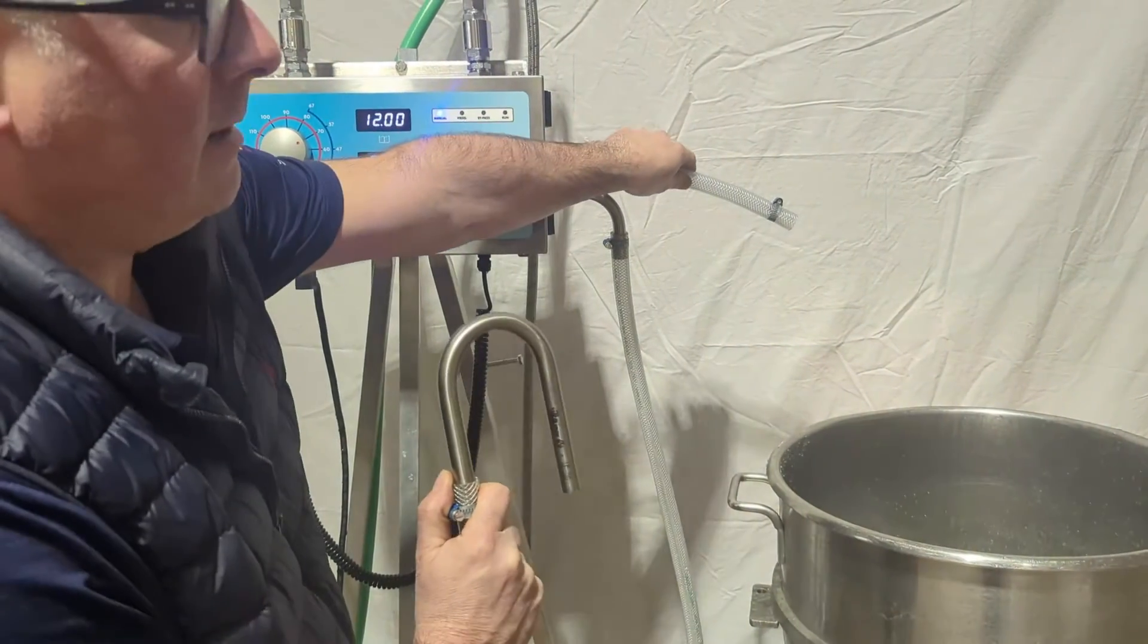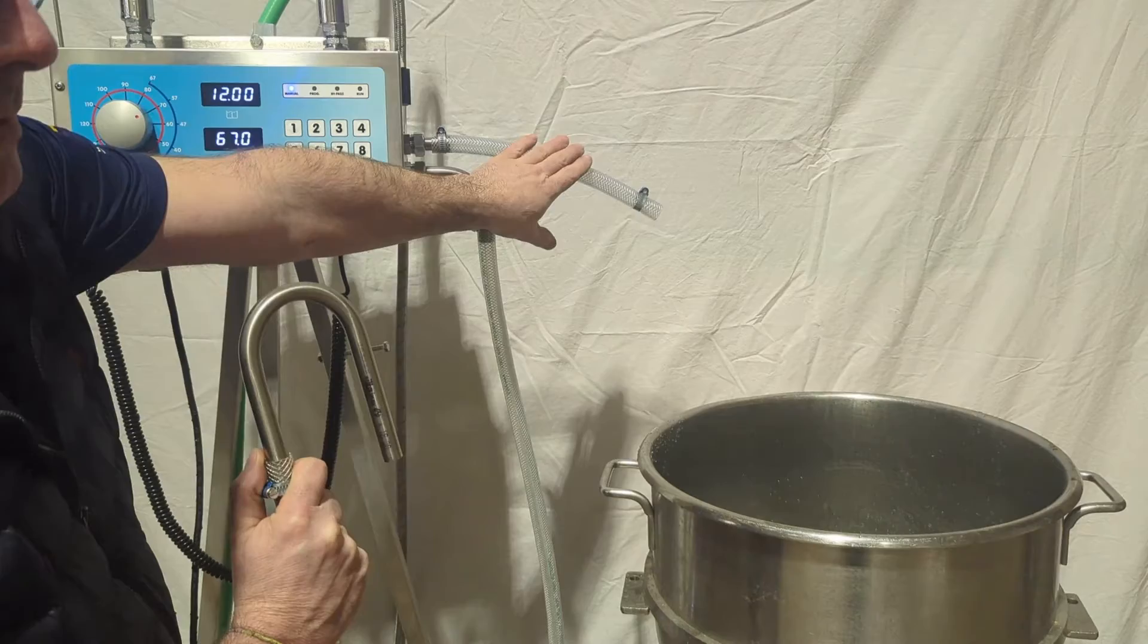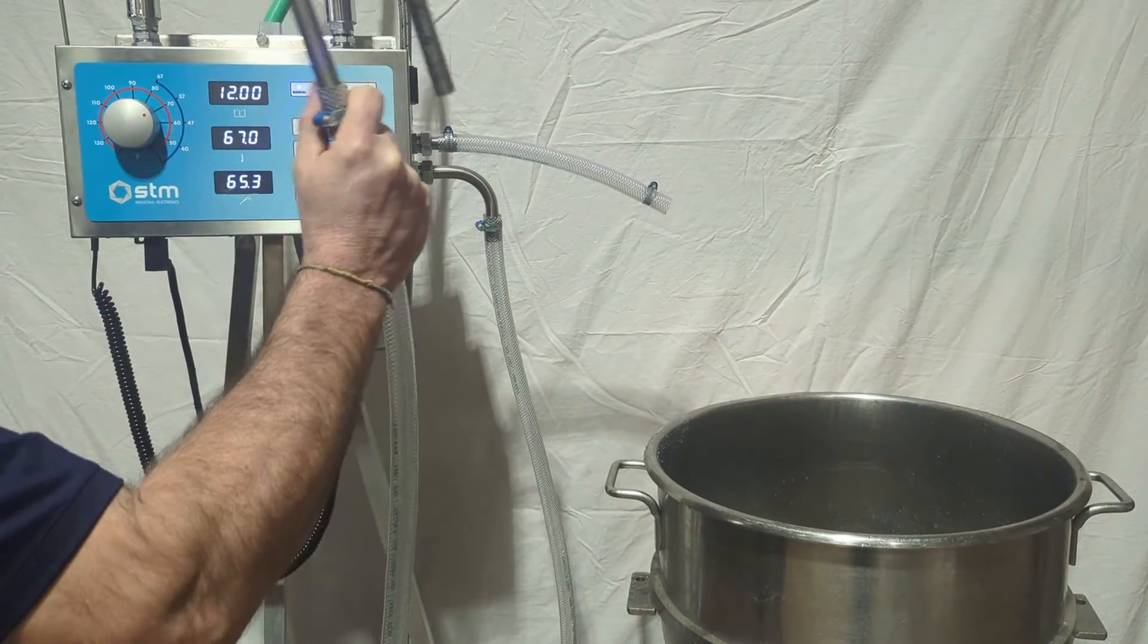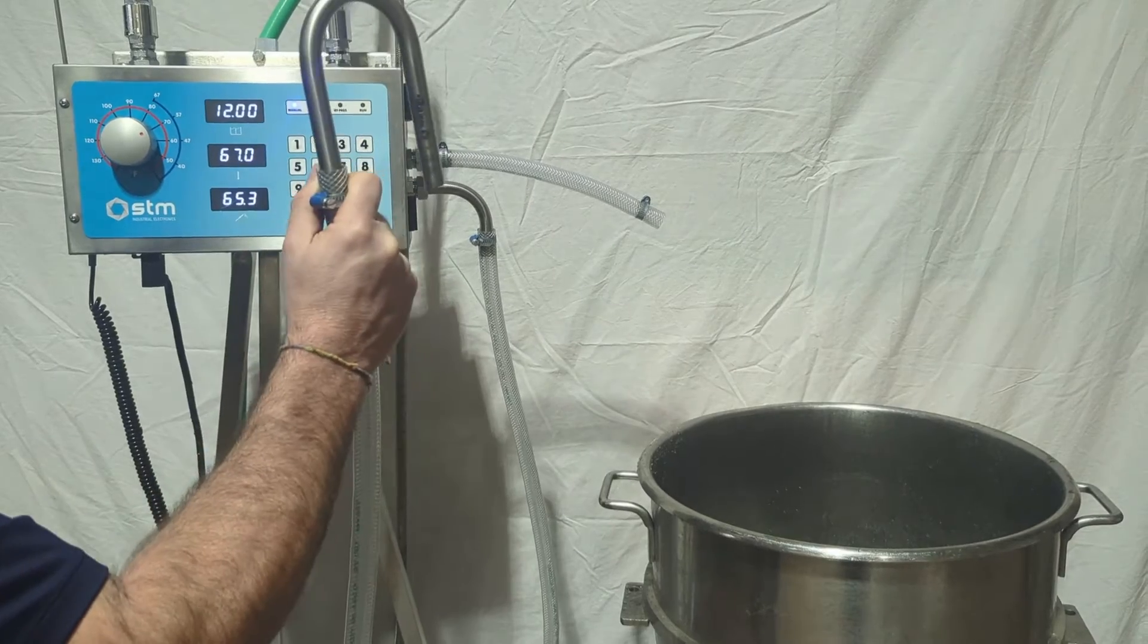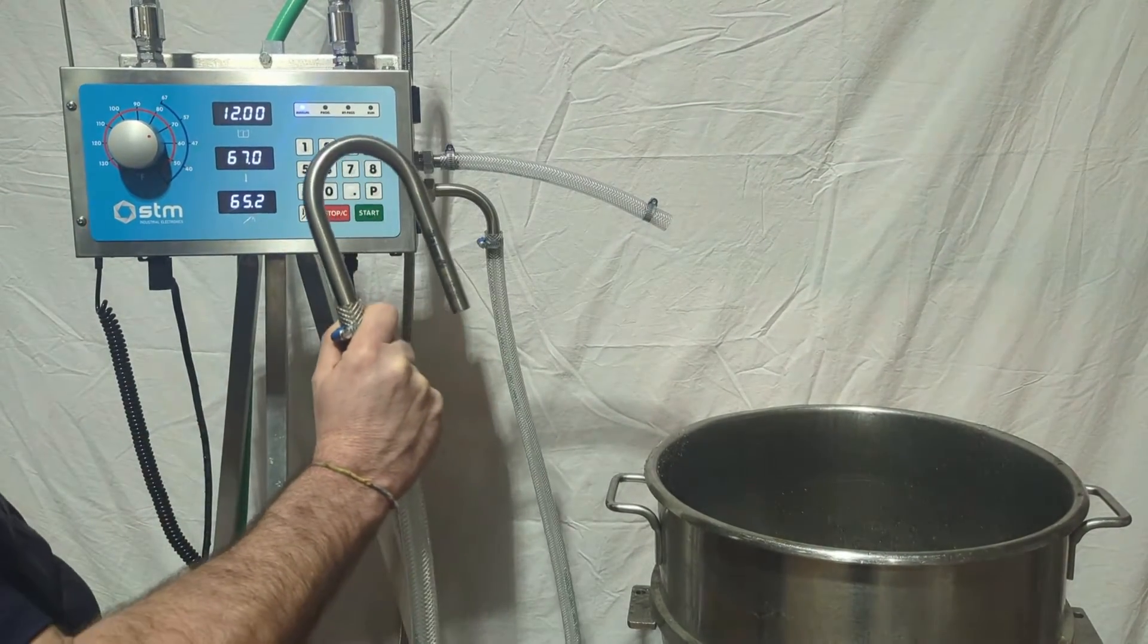When the temperature is not in our set range, it will bypass through the bypass hose. And when all of a sudden it zeroes in within 9 degrees to our setting, it will automatically kick over to this and dispense into the mixing bowl.